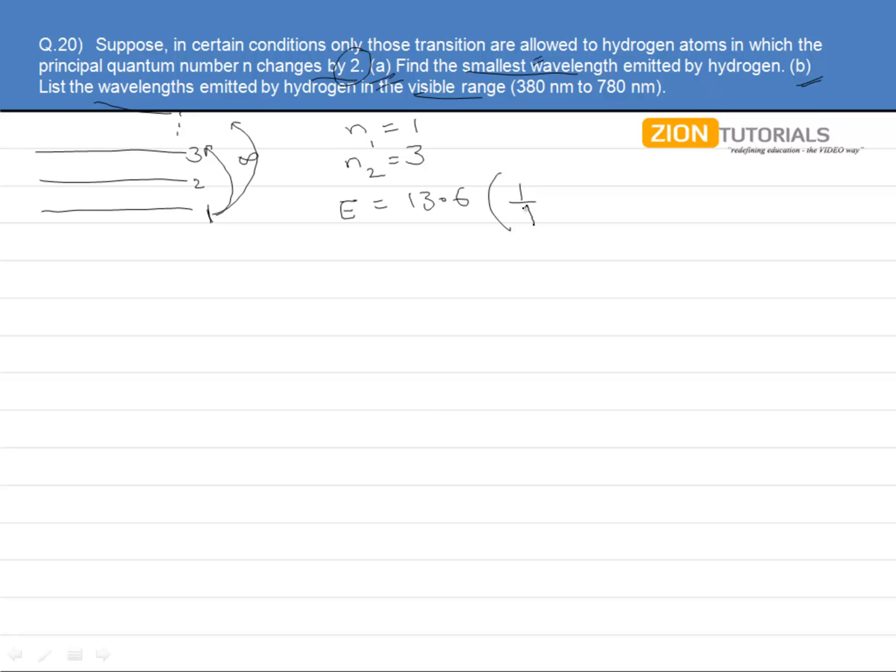Z square being 1 and N square is 1 by N1 square minus 1 by N2 square equivalent to this. And it is further equals to hc by lambda.